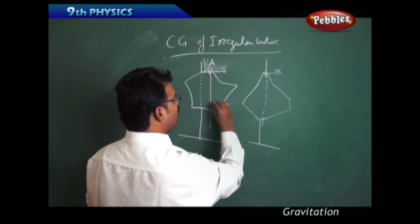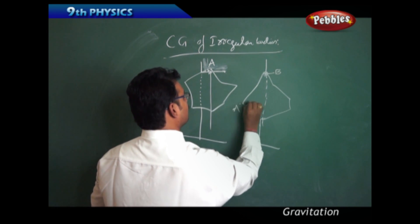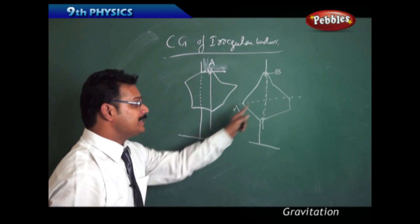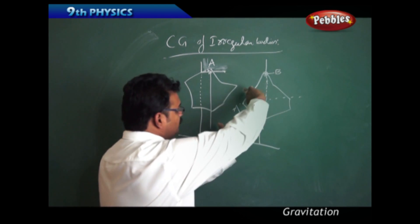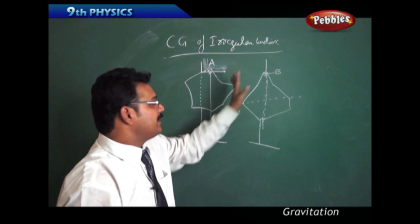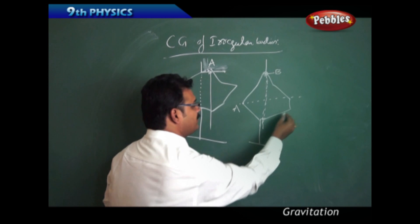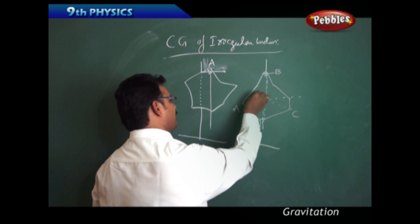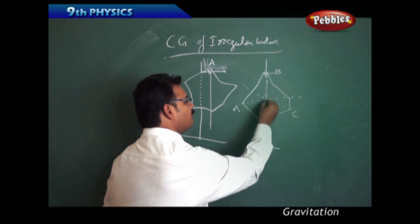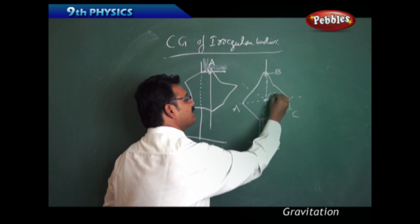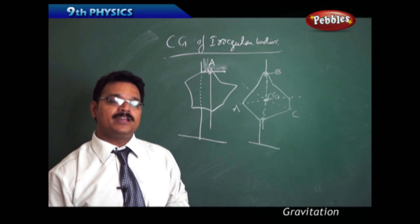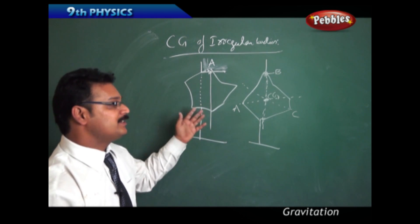Again, turn the plank to any other side and draw a straight line by adjusting it to the stand. Call this point C and draw a line. Now, the three lines are intersecting at one point, and this point is called the centre of gravity. This is the method to find the centre of gravity of irregular bodies.